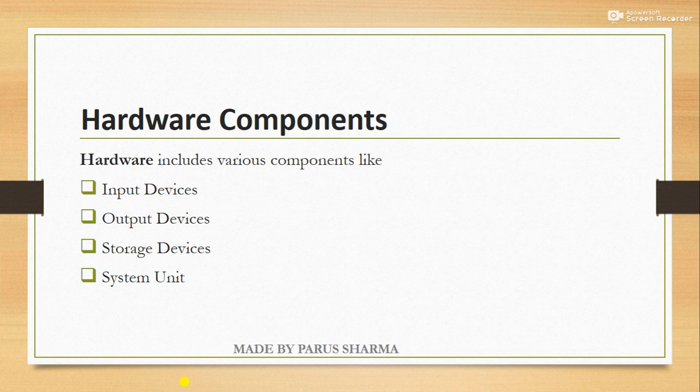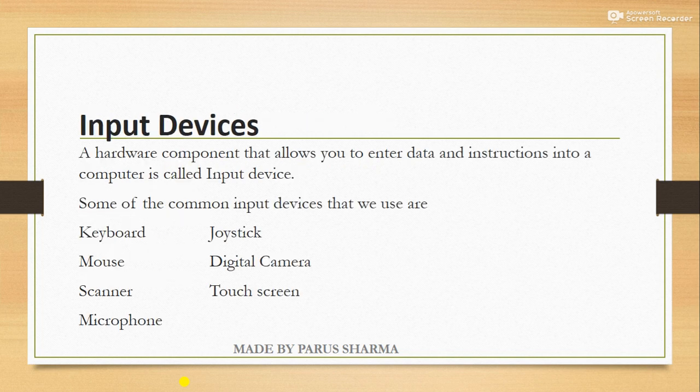Let's go to the hardware components. There are four types: input device, output device, storage device, and system unit. First, we will learn about input devices. Input devices are the devices which allow us to enter data and instructions into a computer.